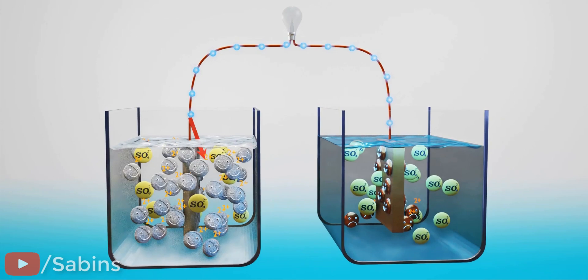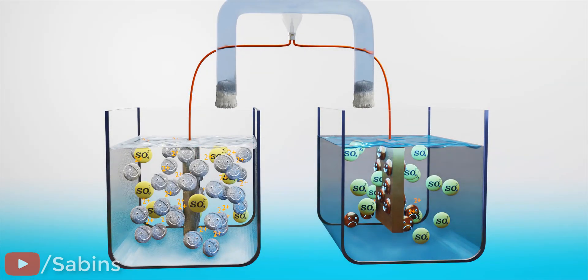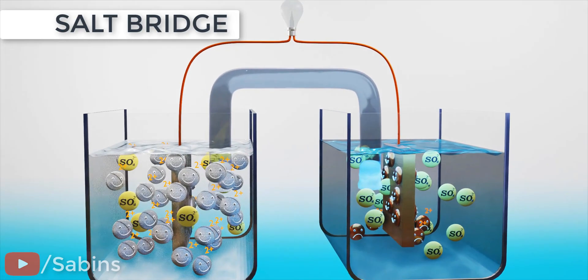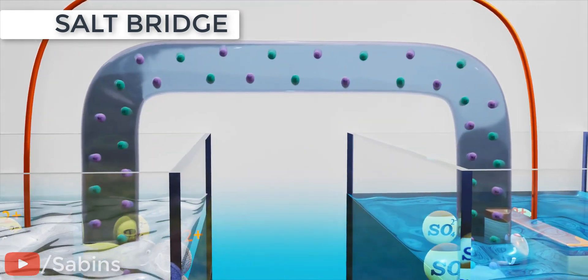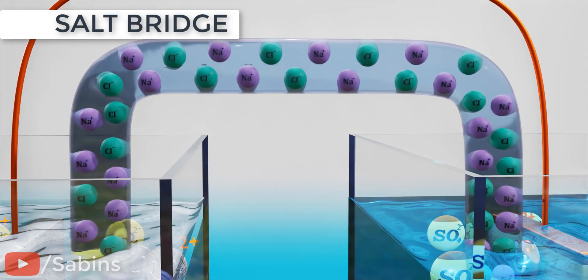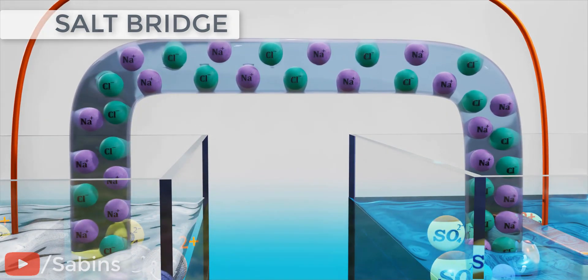Therefore, proper measures must be undertaken to ensure that the electron flow is continuous. A simple solution for this is a salt bridge. The salt bridge is an aqueous solution with a lot of Na plus and Cl negative ions inside it.